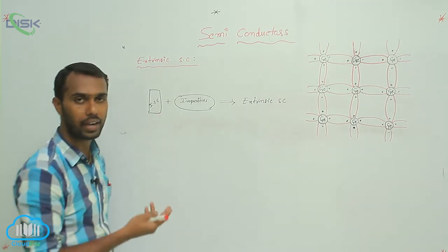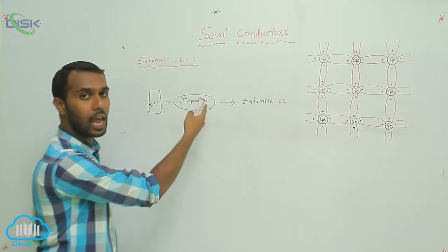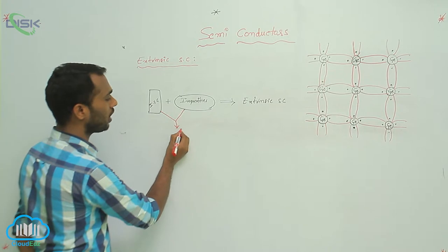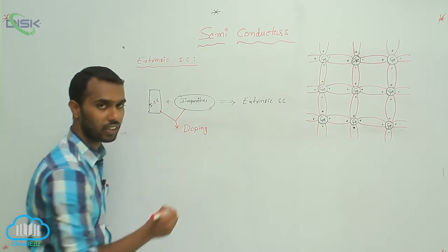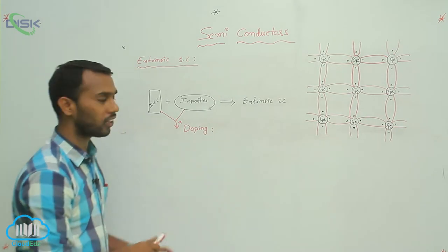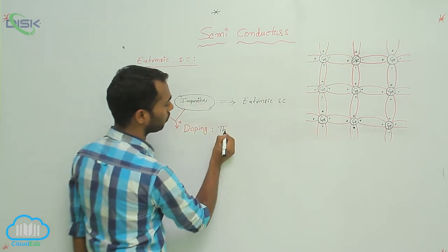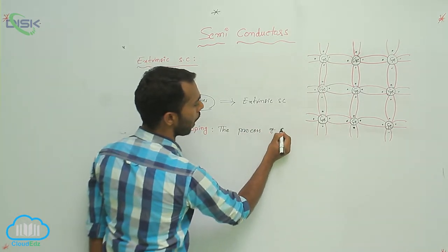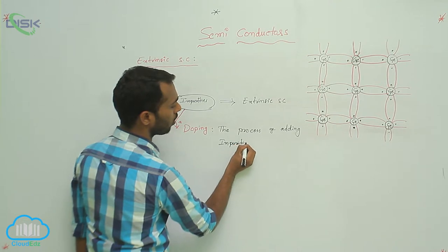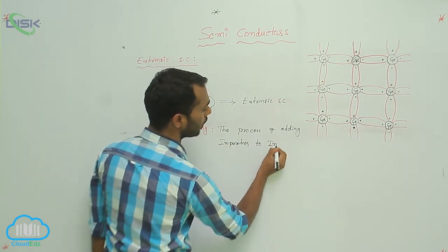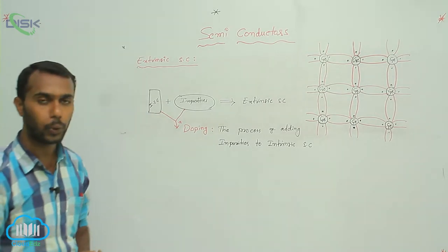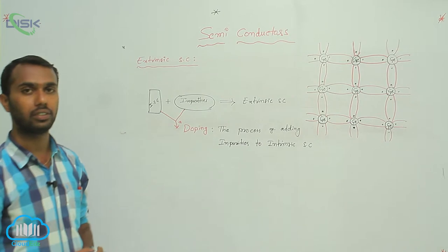Here, what I am doing is adding impurities to an intrinsic semiconductor. That process is called doping. So what is doping? Doping is the process of adding impurities to an intrinsic semiconductor.